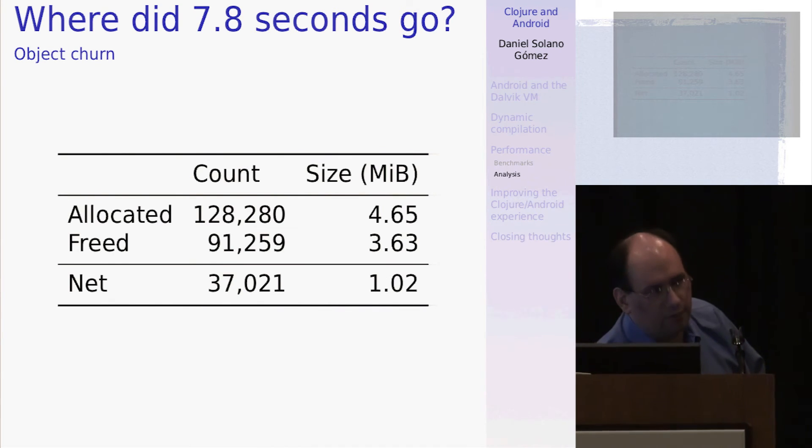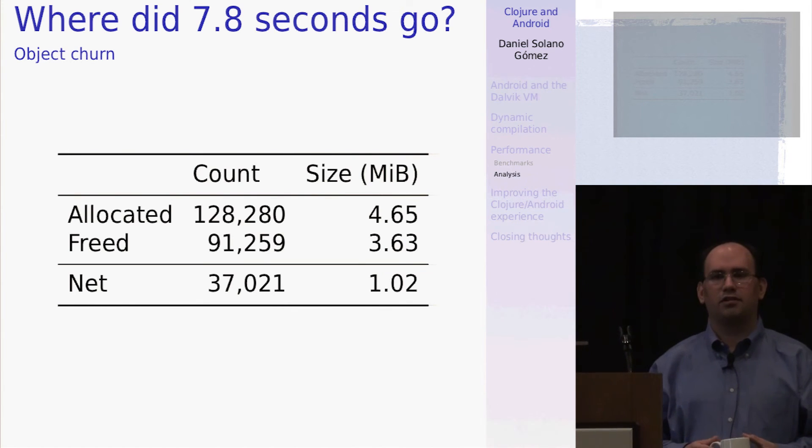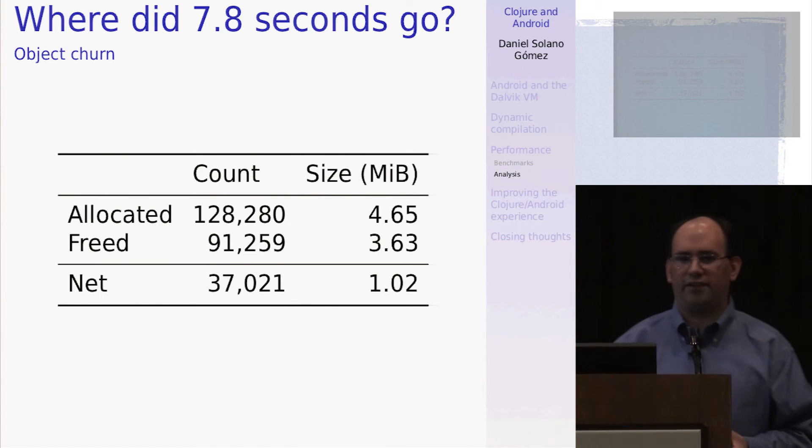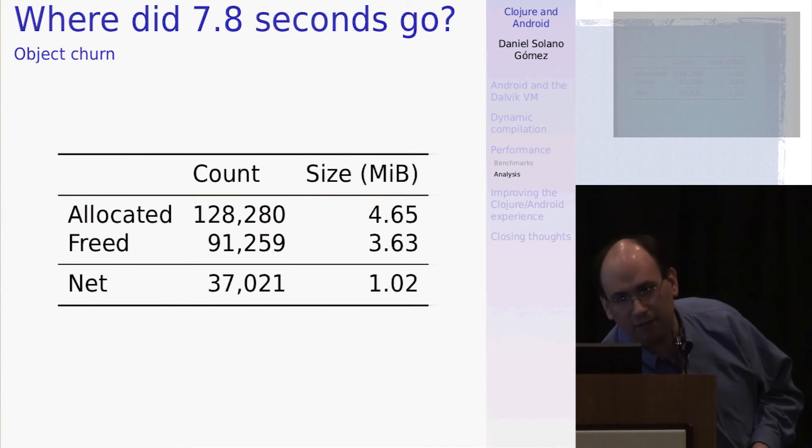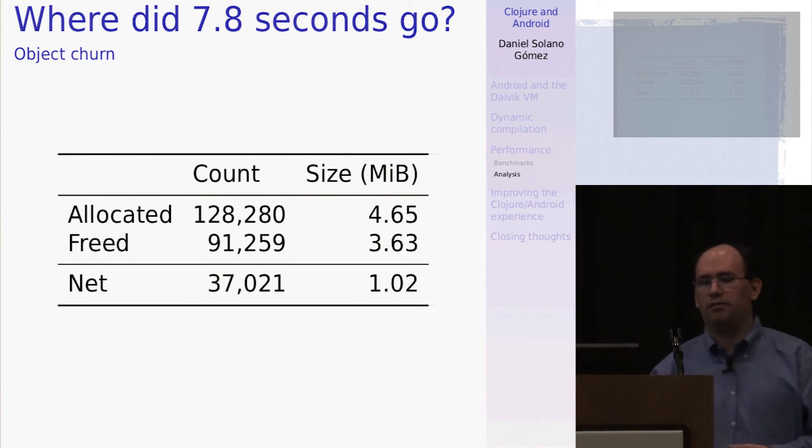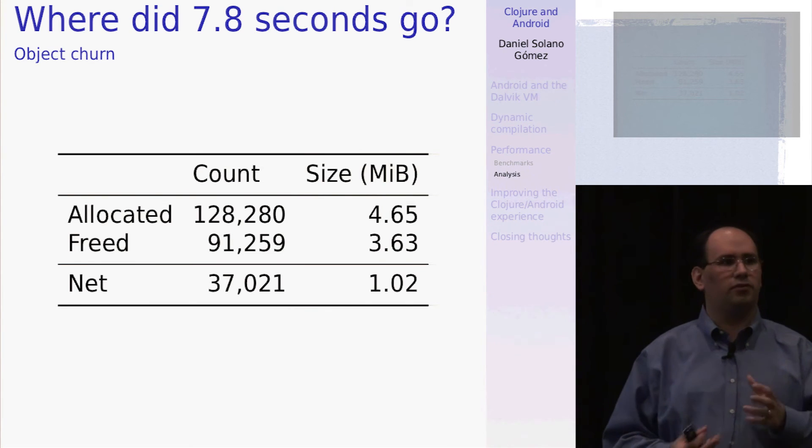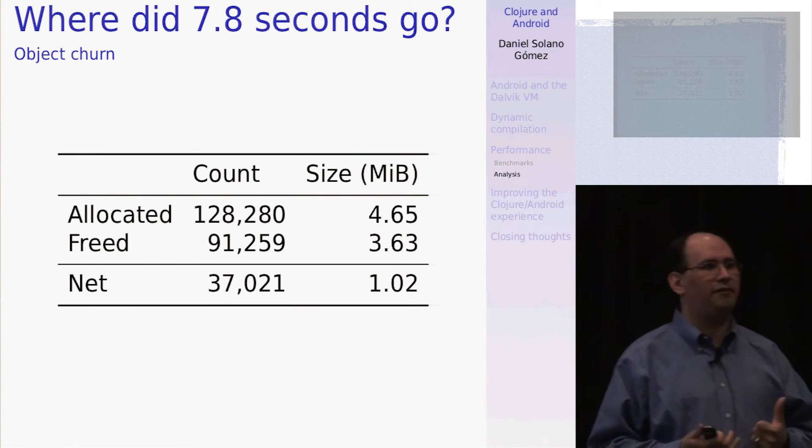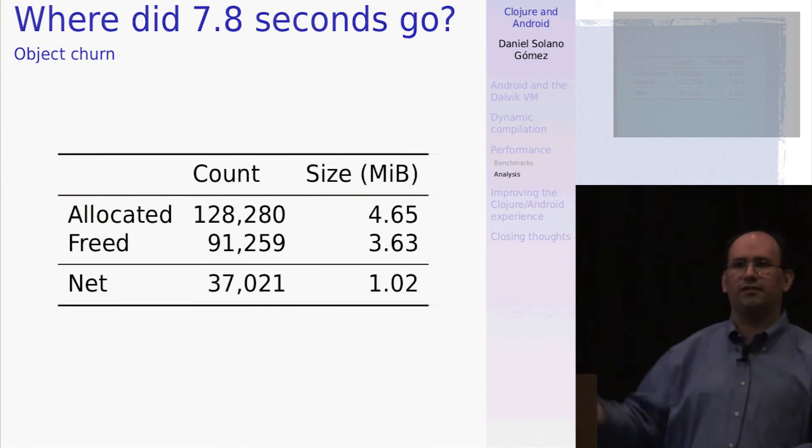One other thing that you would notice when running this benchmark is there is a lot of garbage collection going on. The concurrent garbage collector on my device kicks off about five or six times during that load of clojure core. And what we see here is that there's an immense amount of object churn, about a 300% turnover rate. And as I understand it, this is as a result of building up all that metadata. And since we have our persistent data structures, which we all know and love, unfortunately, here they're hurting us a little bit.